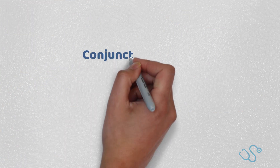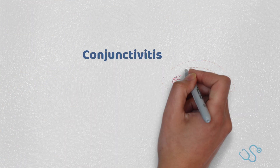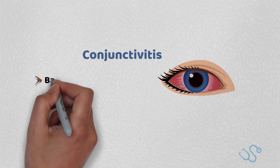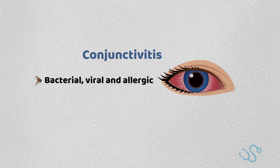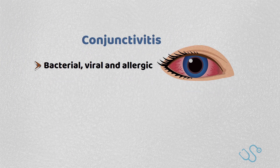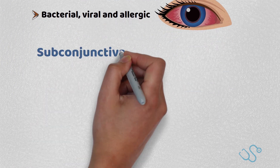Conjunctivitis can be split simply into bacterial, viral, or allergic, depending on the etiology and presentation. Usually, purulent unilateral discharge with some systemic effects may suggest a bacterial infection, whereas those with itching or atopic symptoms may suggest allergic.